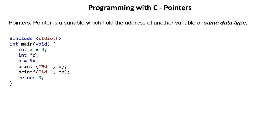Let's see this program. I have a variable X having value 9. Let's make a box — a memory structure. The address of this memory block for X is 100, and the value is 9. I've also created a pointer p, which has a memory block at address 200. I'm assigning the address of variable X to p, which is correct because p is a pointer variable that holds the address of another variable of the same data type.